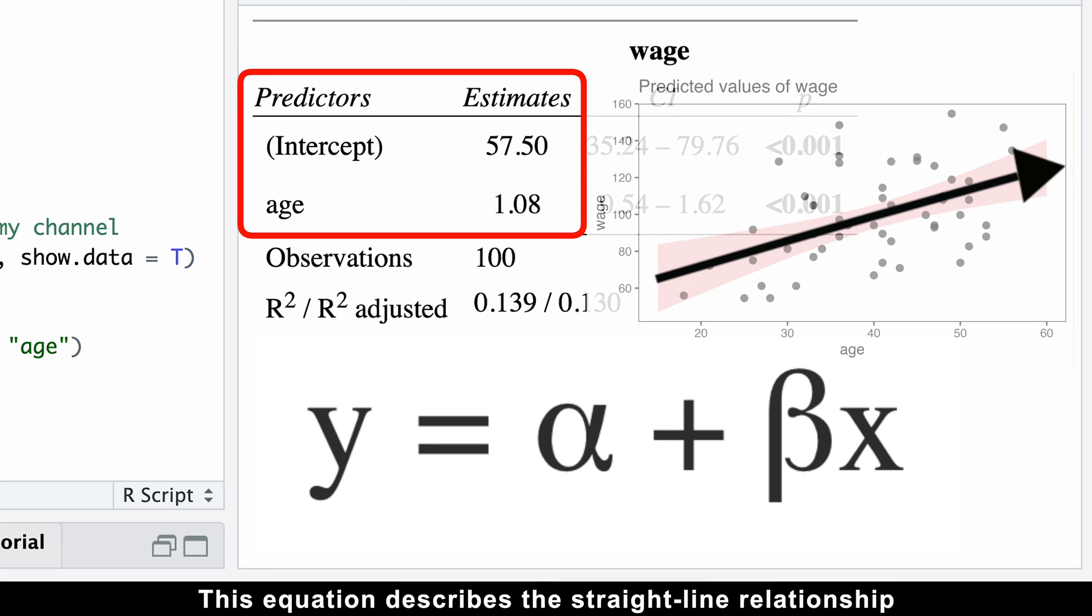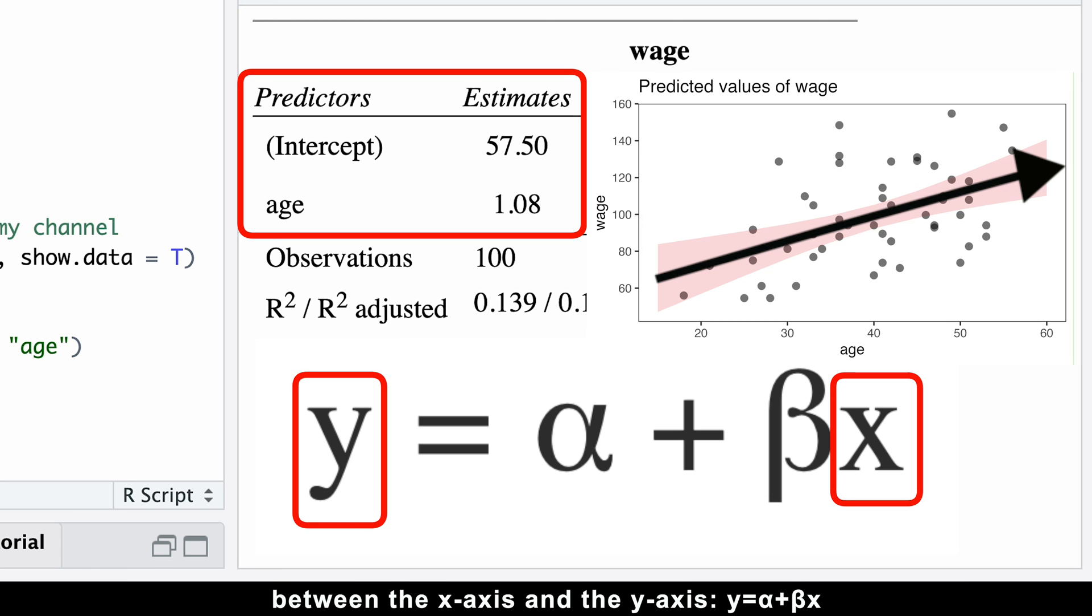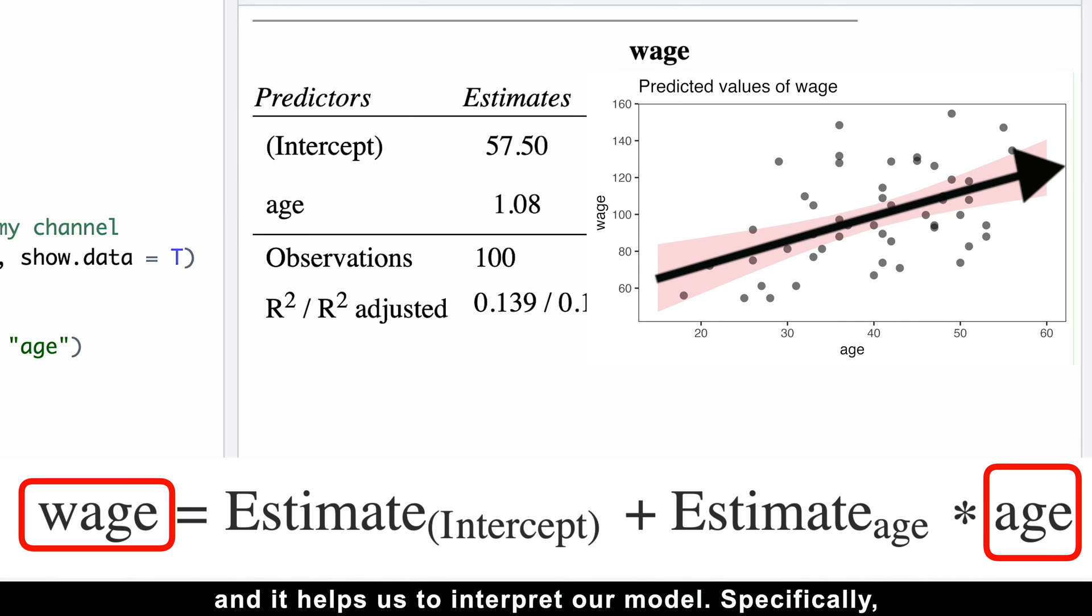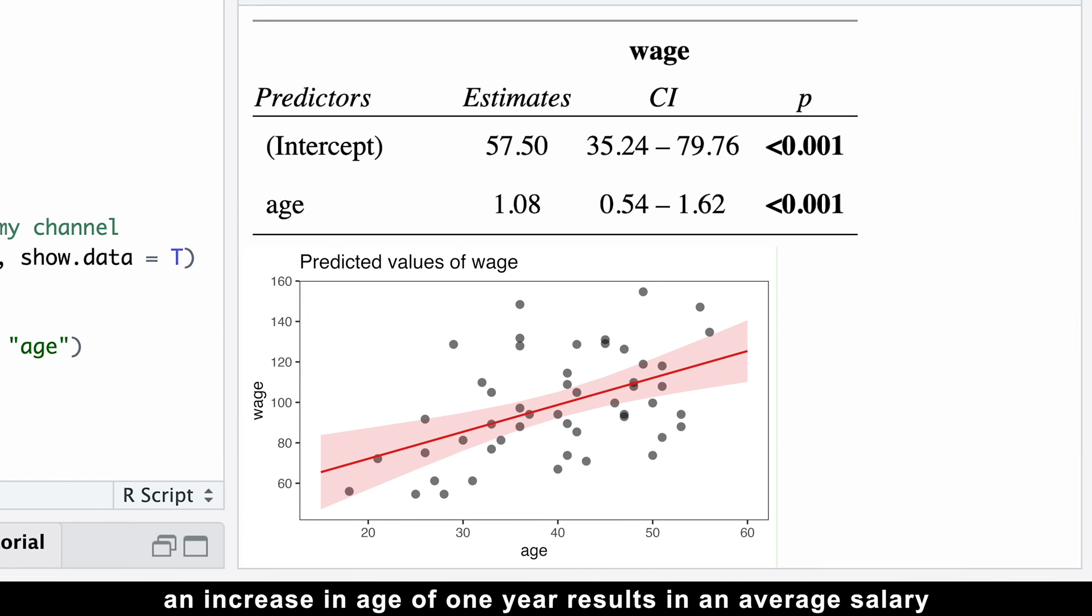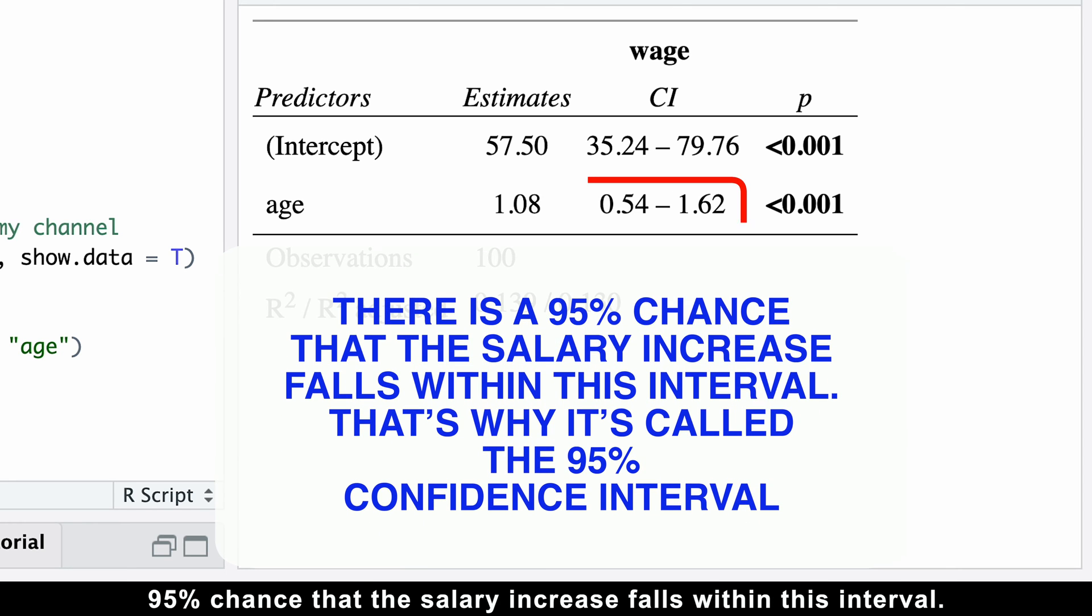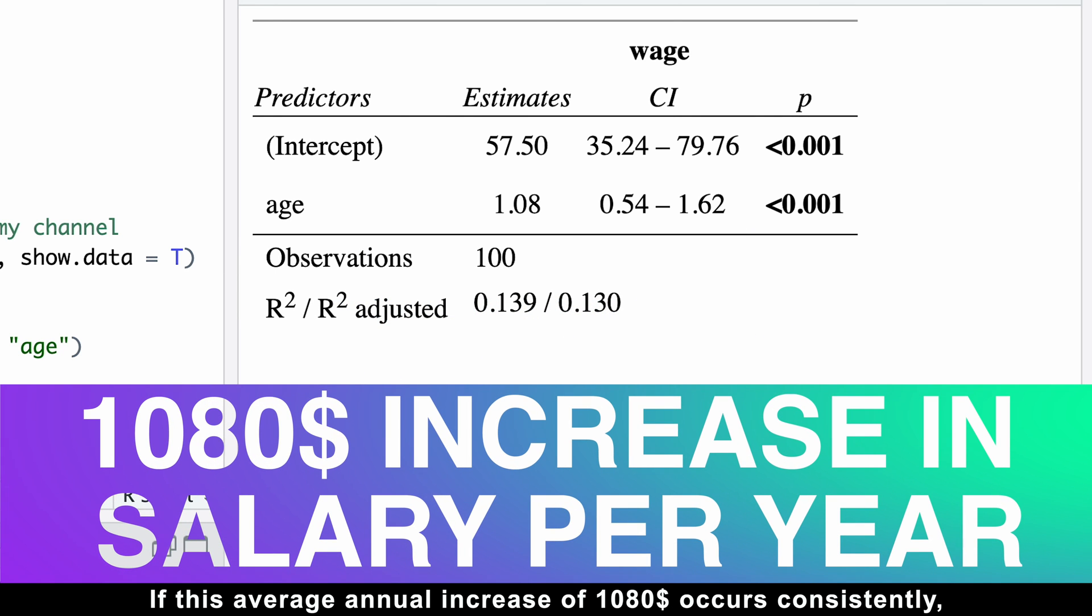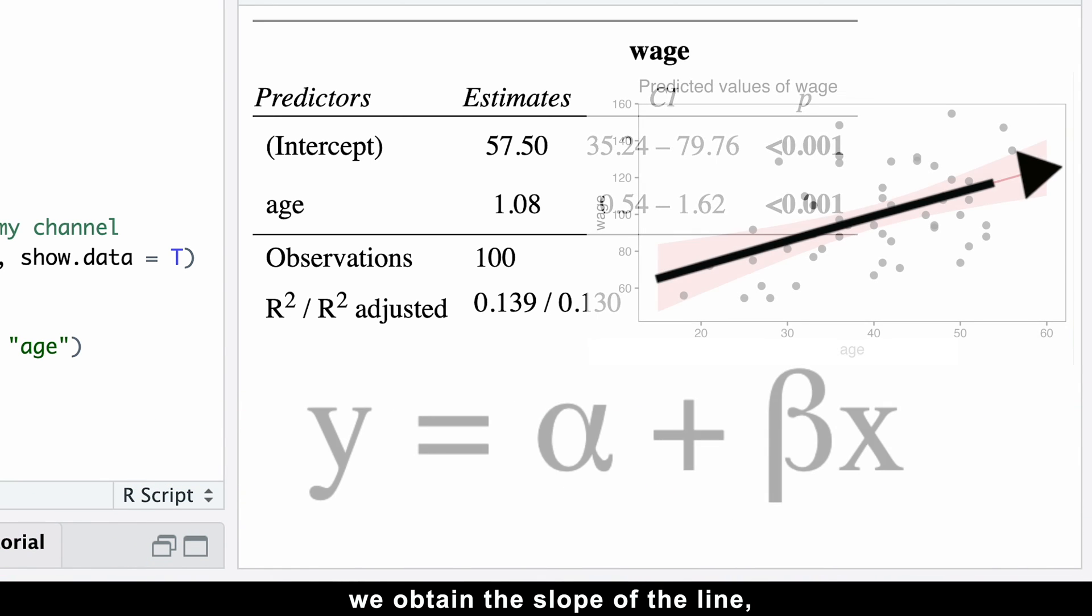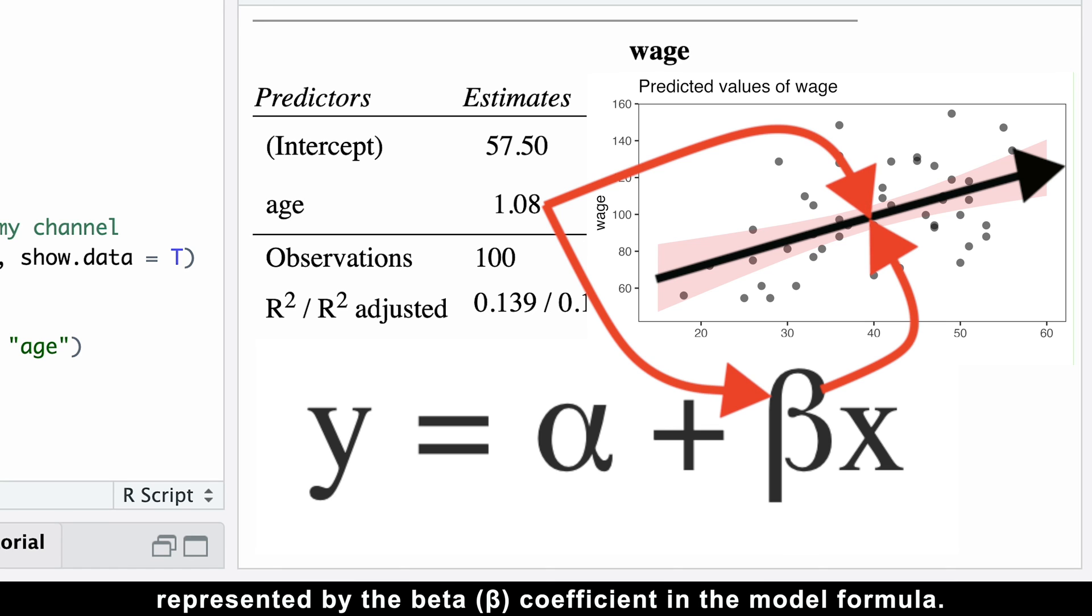This function produces a nice publication-ready table that not only provides exact p-values, but also reveals the equation of our model. This equation describes the straight-line relationship between the x-axis and the y-axis, or in our case, between age and salary. And it helps us to interpret our model. Specifically, an increase in age of one year results in an average salary increase of $1,080. It's important to note that this increase can vary. Sometimes it's as low as $540, and other times as high as $1,620, depending on people's job roles.